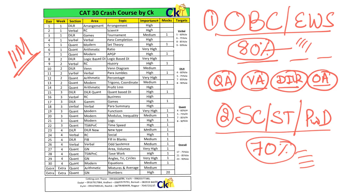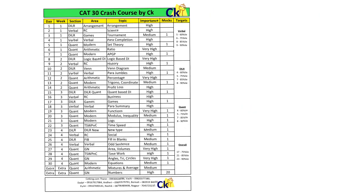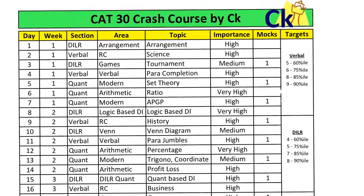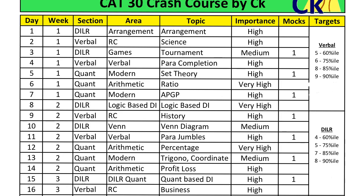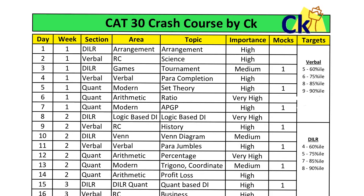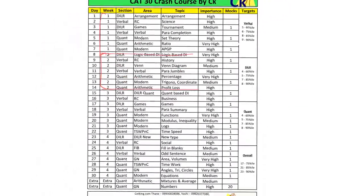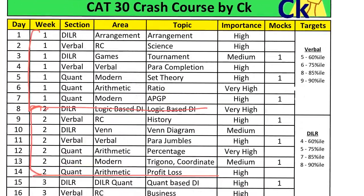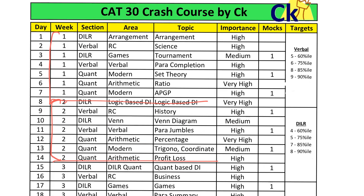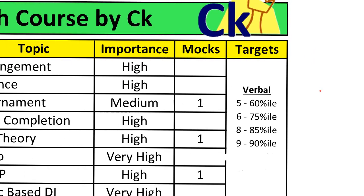So the target is set: 80 for Level 1 and 70 for Level 2. Now let's look at how to achieve the target in the next 30 days. Week 1, Week 2, Week 3, Week 4 — topics and how to give the mock section-wise — these are the numbers you have to get. From the Verbal section, touch any of these percentiles — 60, 75, 85, 90 — totally your choice. If you do more, even better. These are your targets for each section.